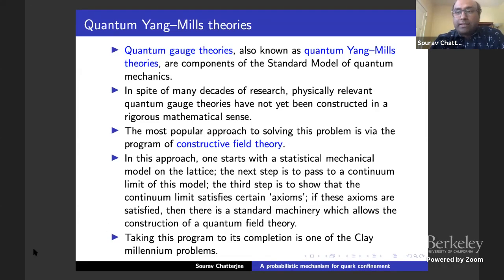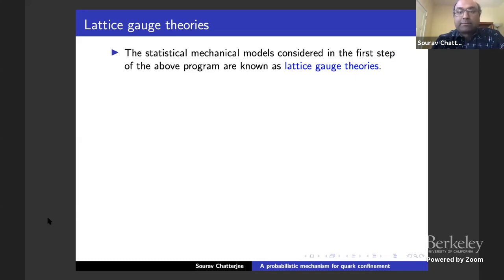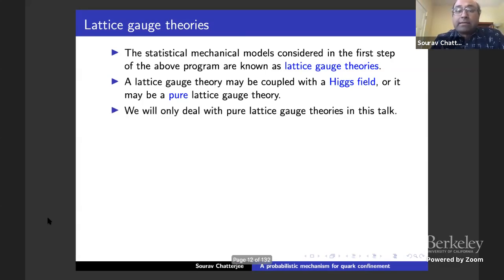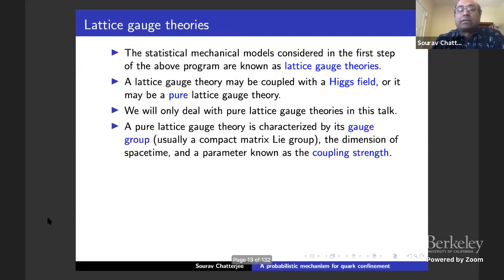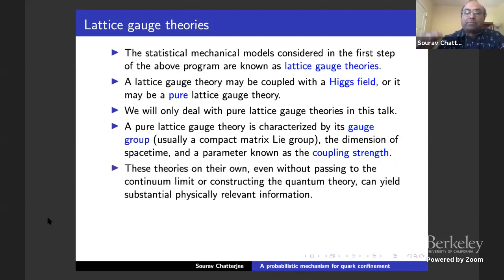Taking this program to its completion is one of the Clay Millennium Problems. The statistical mechanics models that are really relevant in physics and the standard model are known as lattice gauge theories. A lattice gauge theory may be coupled with the Higgs field, or it may be a pure lattice gauge theory. We will deal with only pure lattice gauge theories in this talk. A pure lattice gauge theory has three components: a gauge group (usually a compact matrix Lie group), a dimension of space-time (the most important case is four), and a parameter known as the coupling strength.